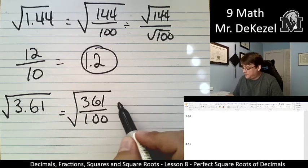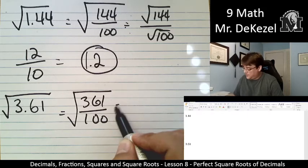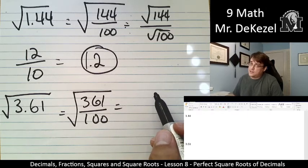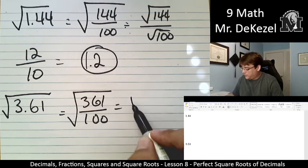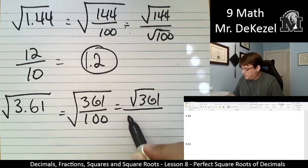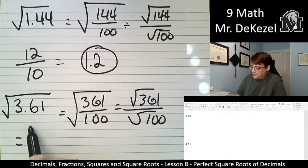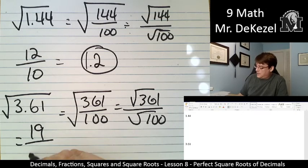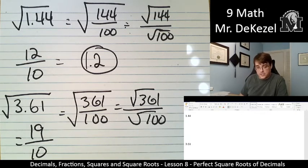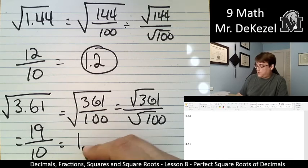Again, an improper fraction, but that is all right. It's the same, I believe, 361. It better be 19. So the root of 361 over the root of 100 is 19 out of 10. Yes, 19 over 10. And that's 1.9.